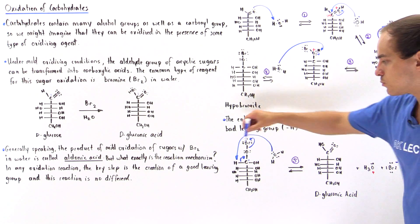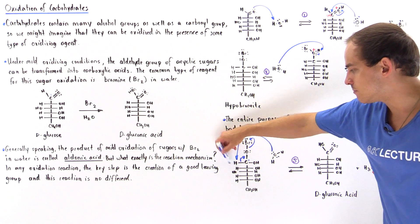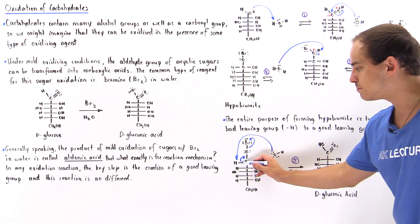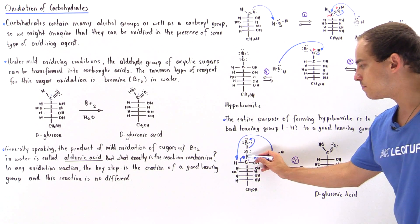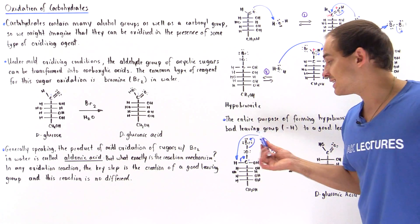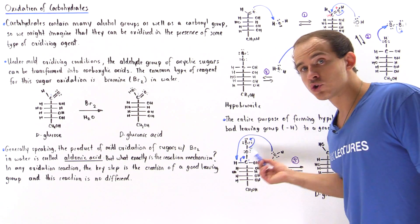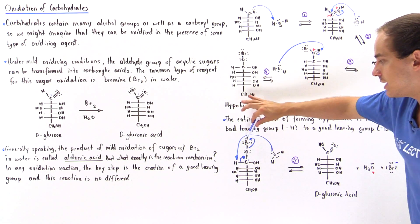So the oxygen deprotonates this H atom at the same time breaking this bond. This bond forms a pi bond here, and that is able to kick off the good leaving group in this area here.